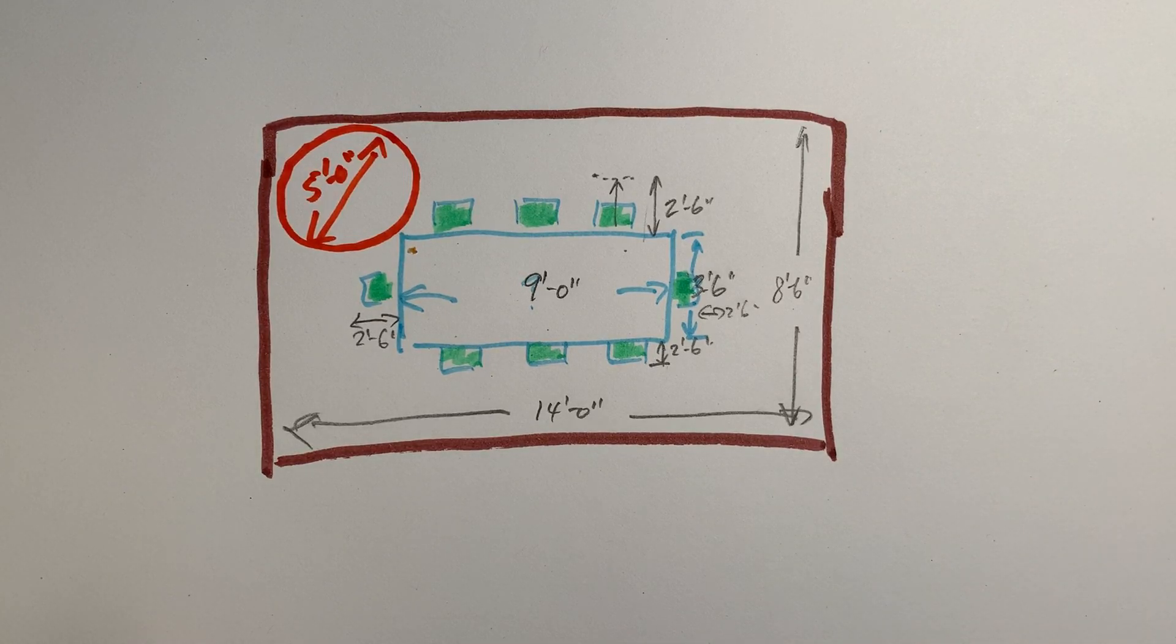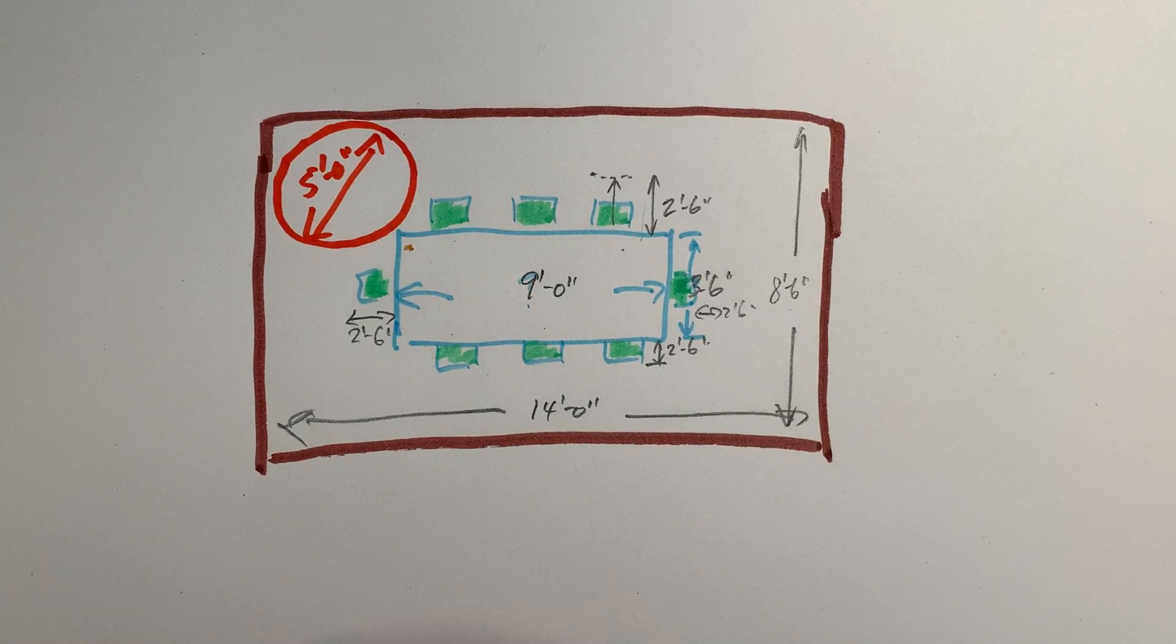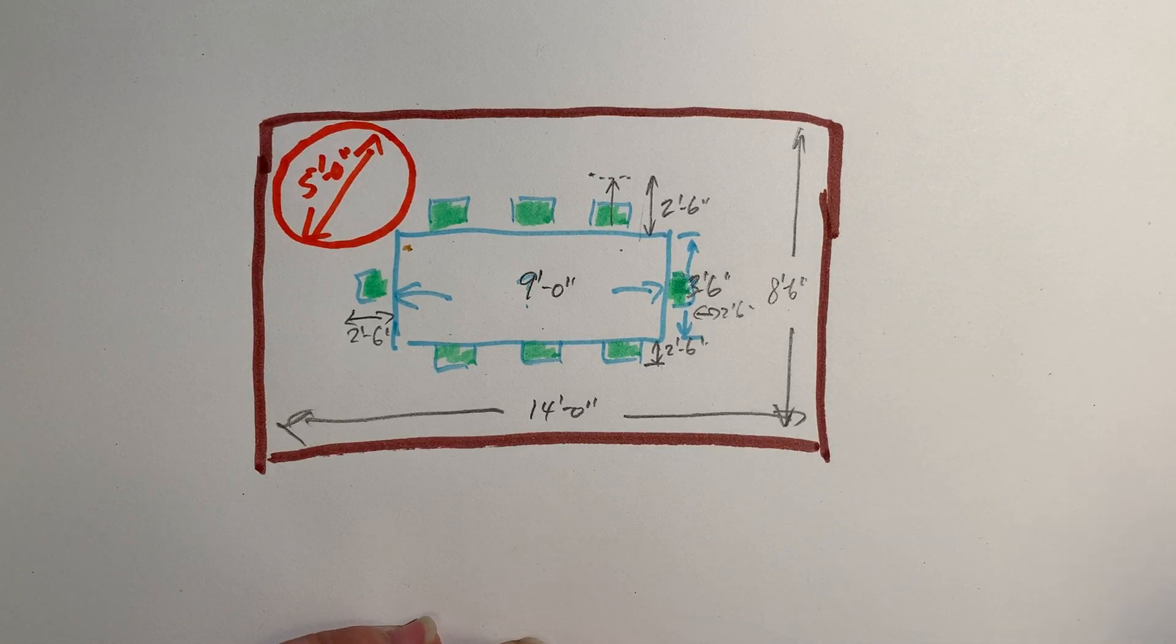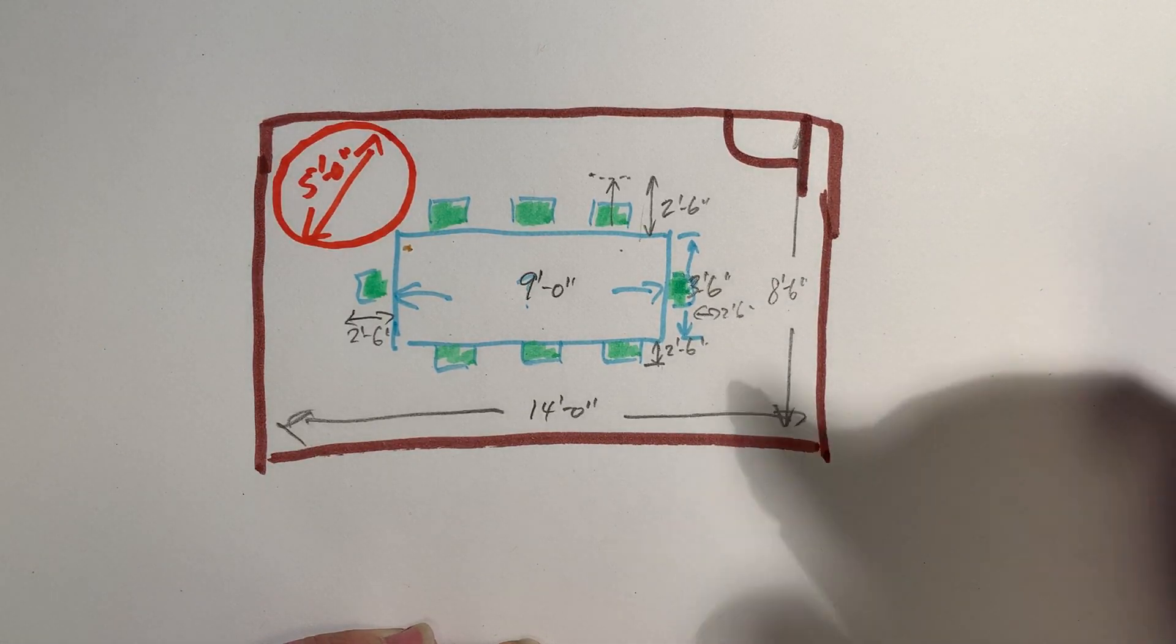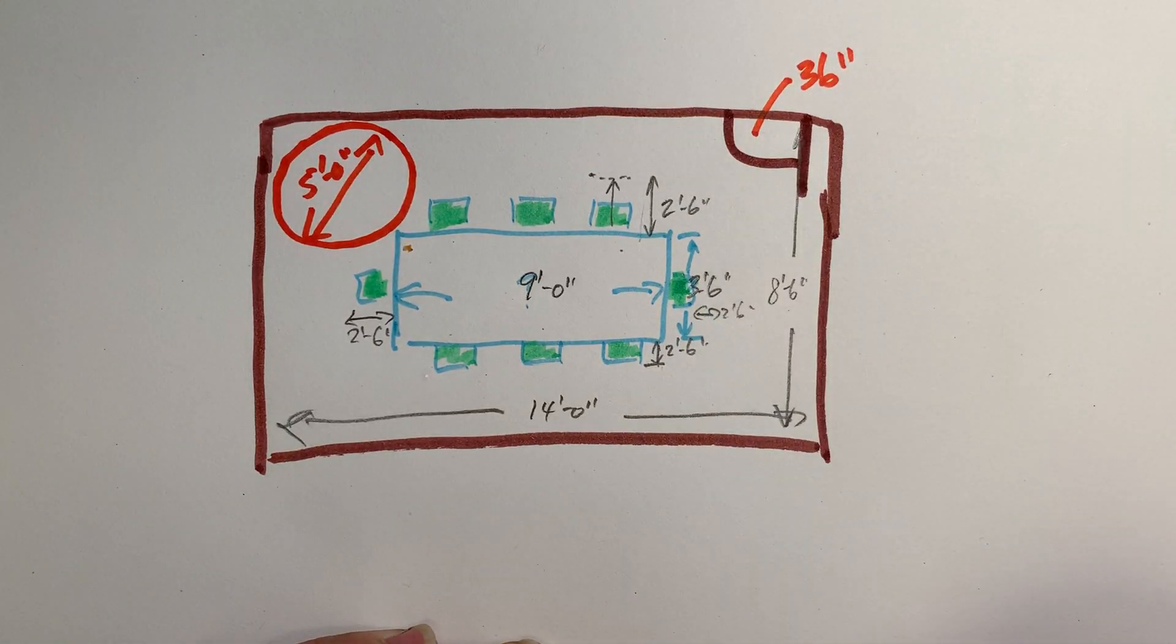Somewhere in this space I have to have a clear five-foot turning space. Somewhere in that particular space I have to be able to accommodate basically a five-foot diameter circle. This allows someone in a wheelchair to turn and change direction comfortably without any obstructions. The other rule that you'll need to consider is if we have a door that enters this particular space. For code, the minimum door requirement for width is 36 inches.